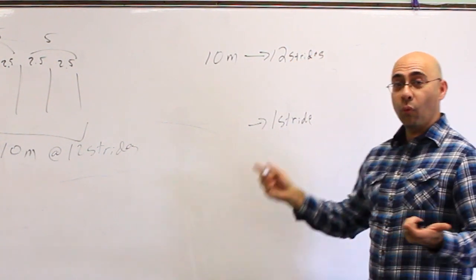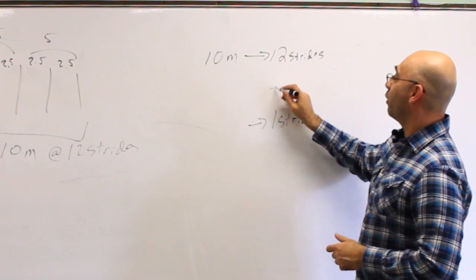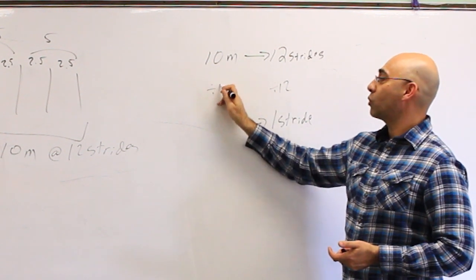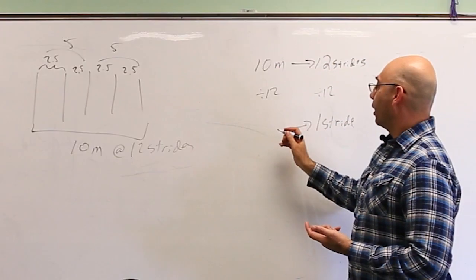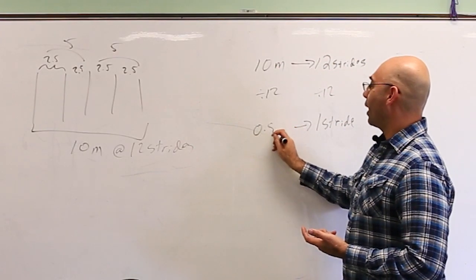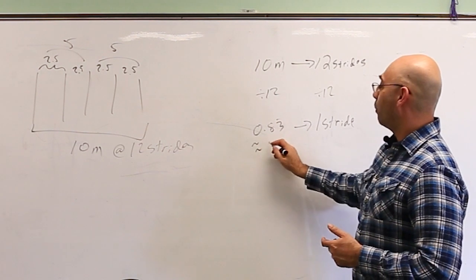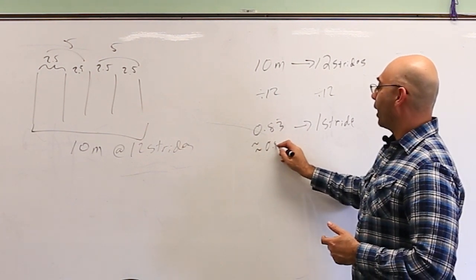So how do you turn a 12 into a one? The basic idea is just divide by 12. So I do the same thing to this side. I divide by 12 and 10 divided by 12 turns out to be 0.83 repeating or if I estimate it, about .83 meters.